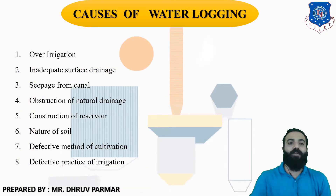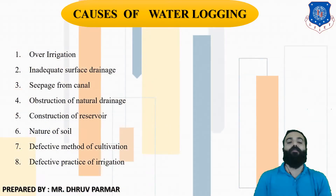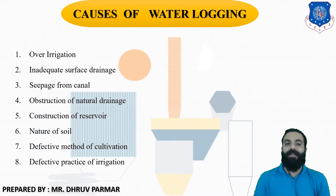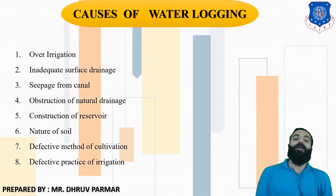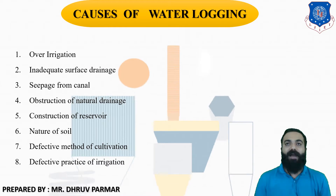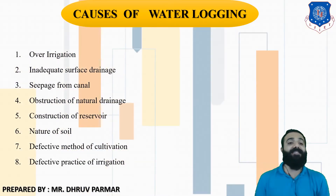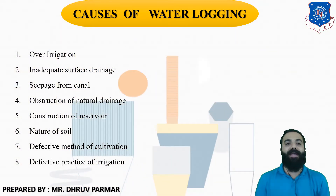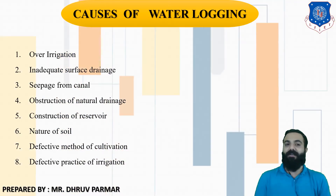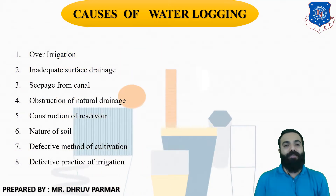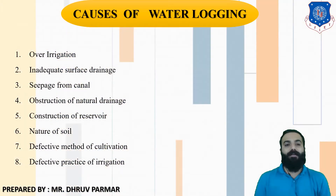There are several causes of waterlogging. The first cause is over-irrigation. For example, if a particular land requires 500 cusecs of water but you supply 600 cusecs, over-irrigation occurs and due to that, waterlogging occurs.